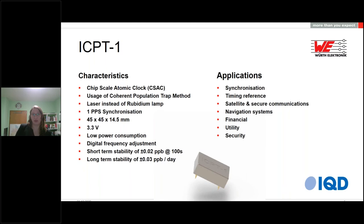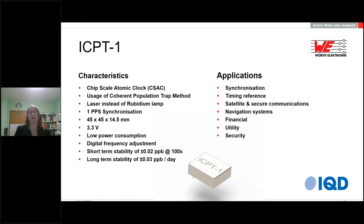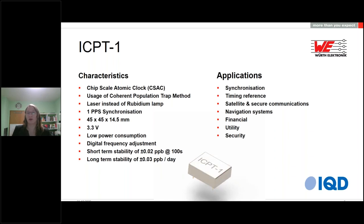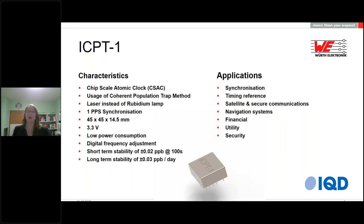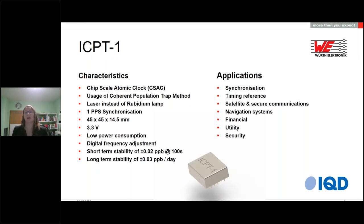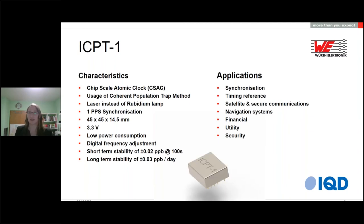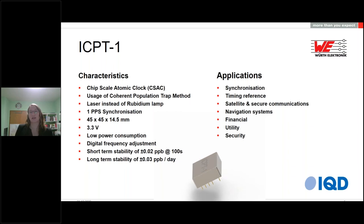The short-term stability is typically 0.02 ppb at a tau of 100 seconds, and the long-term aging is only 0.03 ppb per day. It is ideally suited for all kinds of synchronization and timing applications. It can be used as a timing reference, accepts a 1 pps synchronization input signal, or uses its internal clock to provide good holdover when you lose your signal. It is suited for critical timing applications including financial security, utility, and industrial measurement systems.